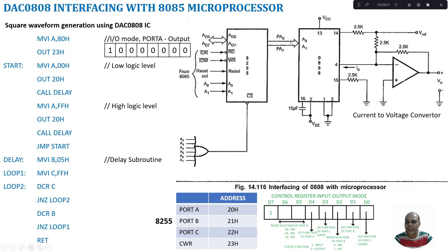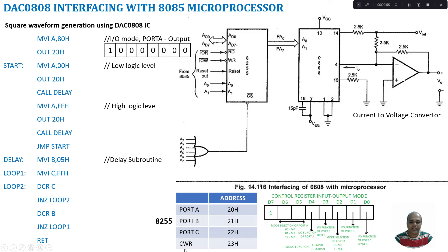Here we are using only port A, so we configure it as an output pin because its data goes as input to the DAC 0808. Port A is set to simple IO mode 0 (bits 00), and the next bit is set to 0, meaning it is an output from the 8255. Other bits can be 0 or 1 since we are not using port B or port C. The value 80h goes to the accumulator, and from the accumulator it is sent to address 23h, which is the control word register address, configuring the 8255.